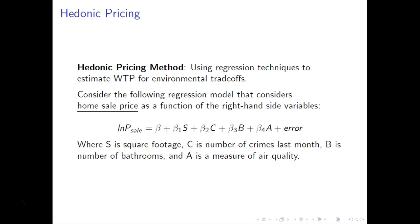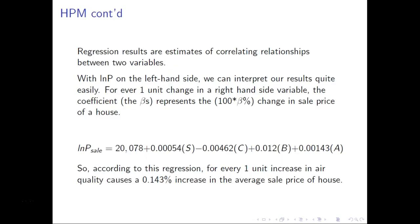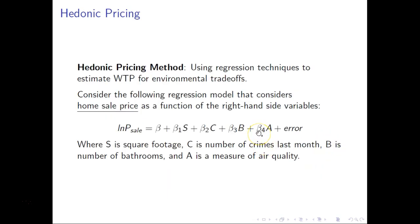The whole point of non-market valuation is to generate a demand curve for environmental amenities. In this model, we're trying to generate the demand curve for clean air by showing how much more people are willing to pay for a home in a clean air area than in a dirtier area. Regression results are estimates of correlating relationships — our expectation is that as air quality rises, willingness to pay for the home rises too, and the home price will be higher. Looking at the example regression results, the coefficient beta-4, which is our coefficient of interest, is positive. This tells us that when air quality goes up, it has a positive influence on the sale price of a home, and we can quantify that result in a very specific way.